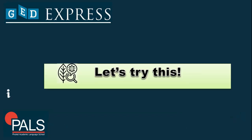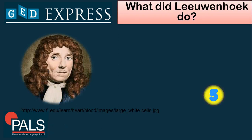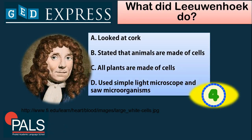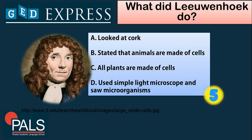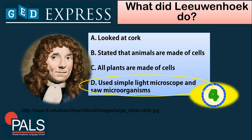Now that you have an understanding of the cell theory and the different people associated with it, let's have an assessment. First question: what did Leeuwenhoek do? A. Look at cork. B. Stated that animals are made of cells. C. All plants are made of cells. D. Used a simple light microscope to observe microorganisms. The answer is letter D — Leeuwenhoek was able to use a simple light microscope to observe microorganisms.